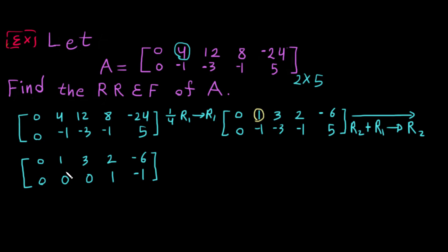Here is the first leading one. Now from here we go down then go right until we find the next leading one — and here it is. The rest of this column should also be zero. When we go down to search for the next leading one, it's fine to have non-zero values above, but we must not have non-zero values below the leading one.